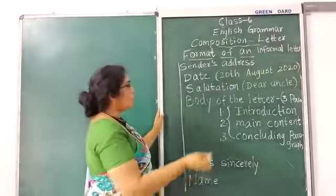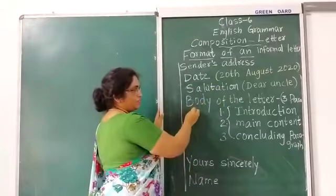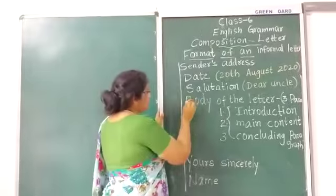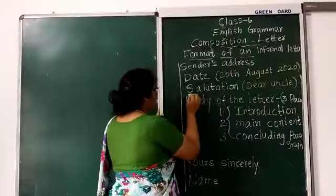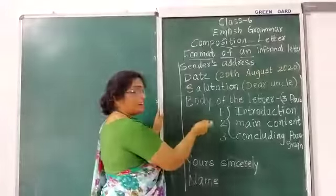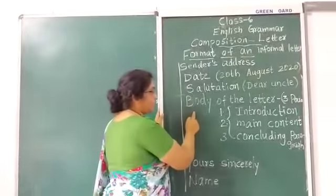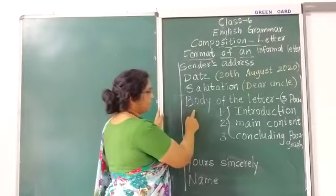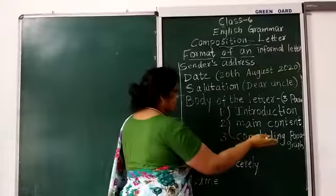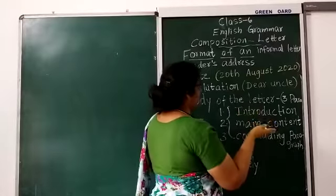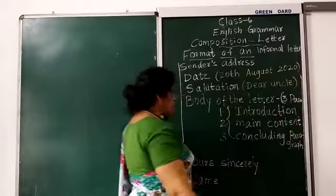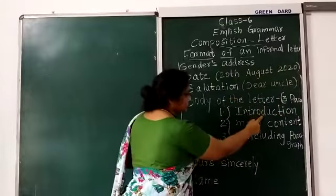Next is the body of the letter. Here also you have to leave a line in between. The body of the letter contains three paragraphs: the first one is the introduction, the second is the main content, and the third is the concluding paragraph.